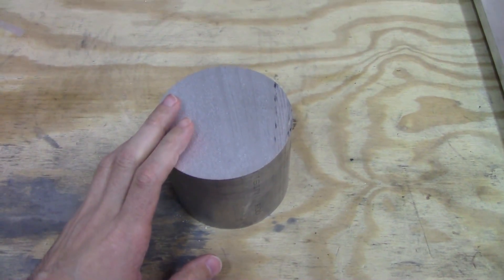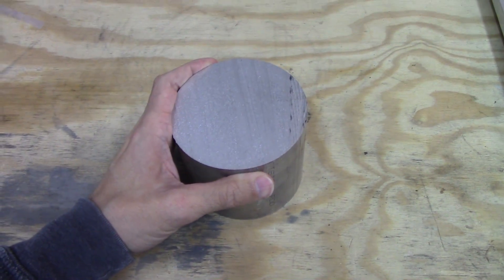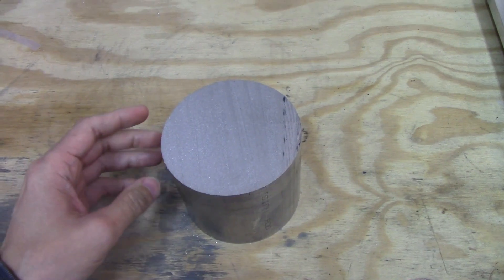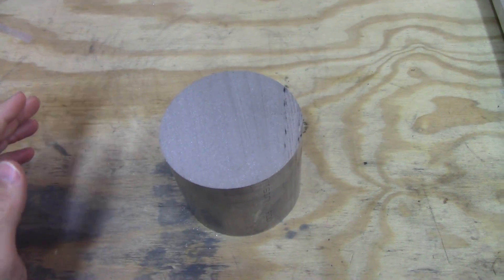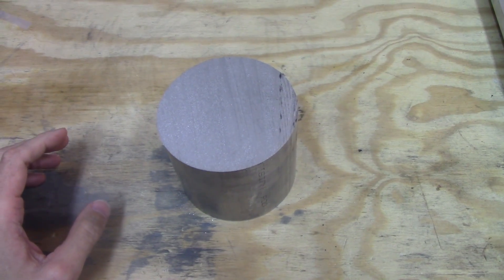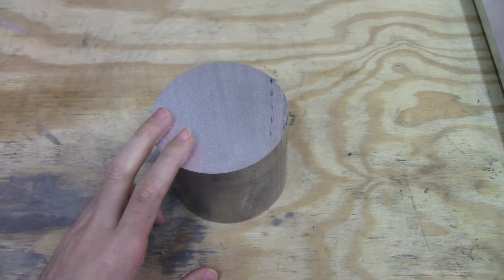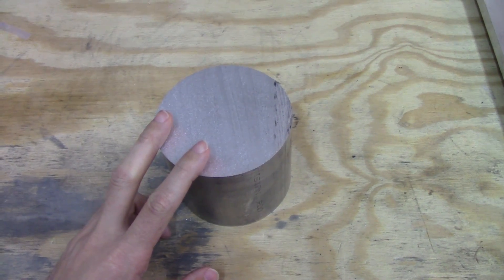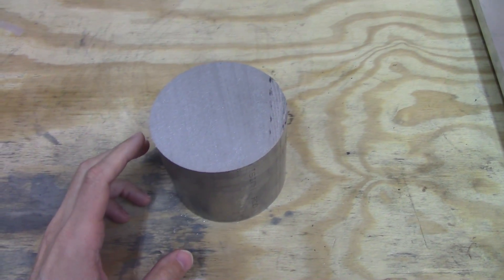What we're going to be making is a spindle lock for the milling machine. You can buy these spindle locks for anywhere from $50 to $100 depending on where you buy them, but I've had this piece of aluminum waiting around for something and I'm finally going to use it.